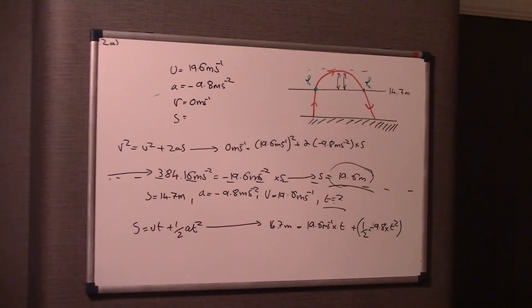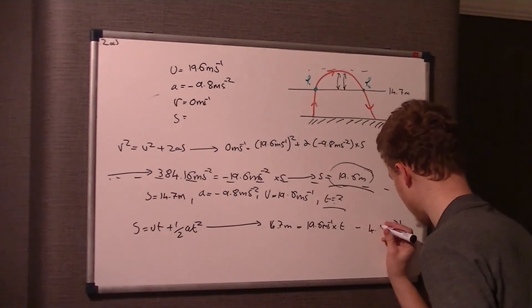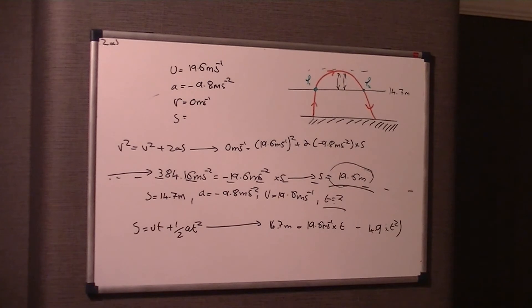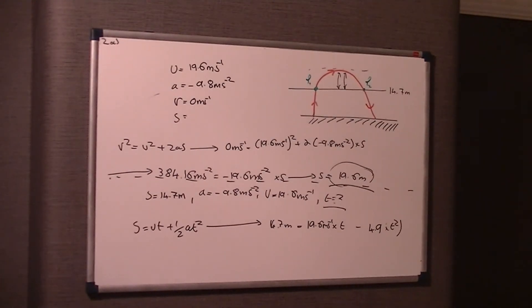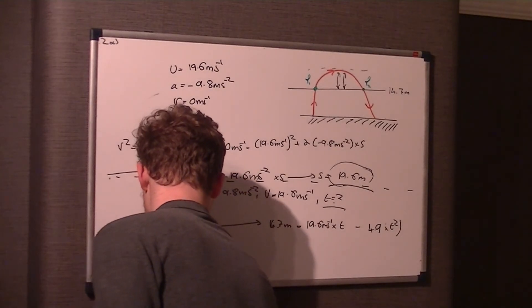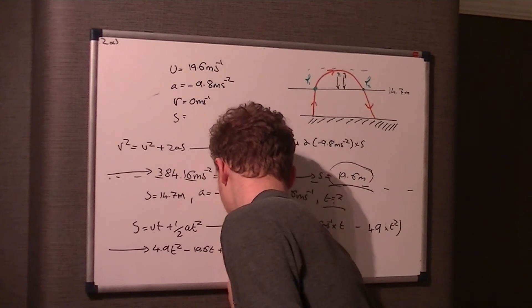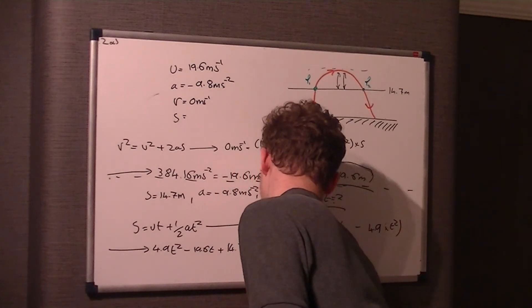So substituting our numbers, 14.7 meters is equal to ut, which is 19.6 meters per second times t, plus half a t squared, and a being negative 9.8, so it's negative half times 9.8 times t squared. You can change that to minus 4.9 t squared because that would be half of 9.8.